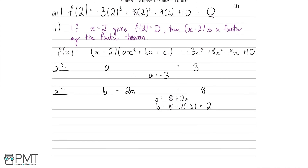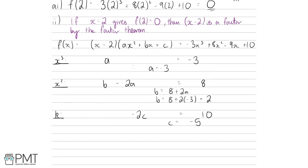Lastly, let's compare constants. We're going to have minus 2 times c as our only constant on the left-hand side, and on the right-hand side we have plus 10. Dividing both sides by minus 2, c is just going to be minus 5. Now we can successfully factorise f of x as two algebraic factors: x minus 2 times minus 3x squared plus 2x minus 5.